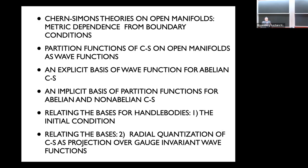Chern-Simons theories on open manifolds can be given a metric dependence if you give boundary conditions that contain some metric data. The partition functions of Chern-Simons theories on open manifolds also have a dual role: they are wave functions in a canonical quantization of the theory. This has been known for a long time, and for a long time we have had a very explicit basis of wave functions, in particular for abelian Chern-Simons theories.